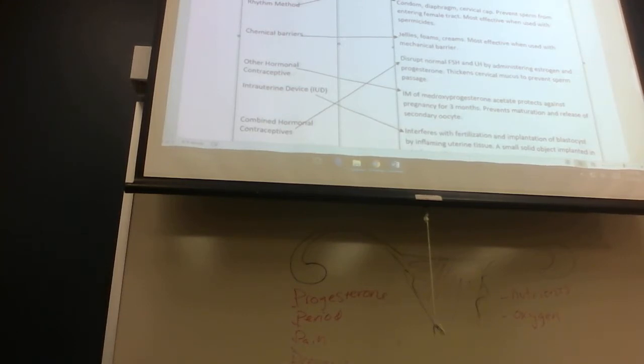Rhythm method. This is when females abstain from sex for two days before and one day after ovulation. This is known to be not effective, because female hormones are everywhere, and you can't predict when you're going to ovulate. Plus, some people who try to do rhythm method, people want sex. They want it now. That's not something you can wait a couple days for.